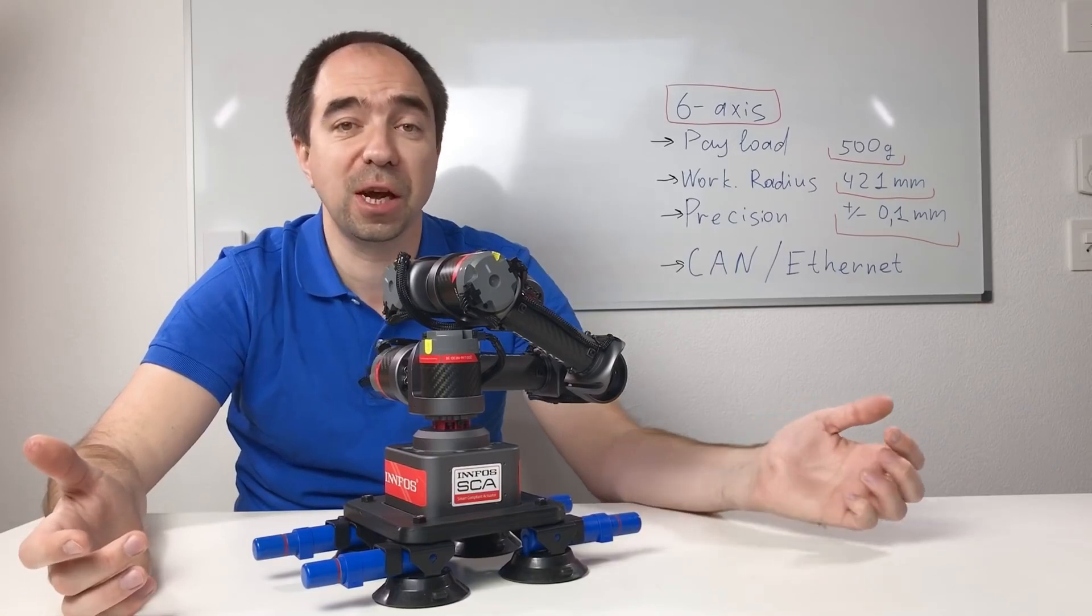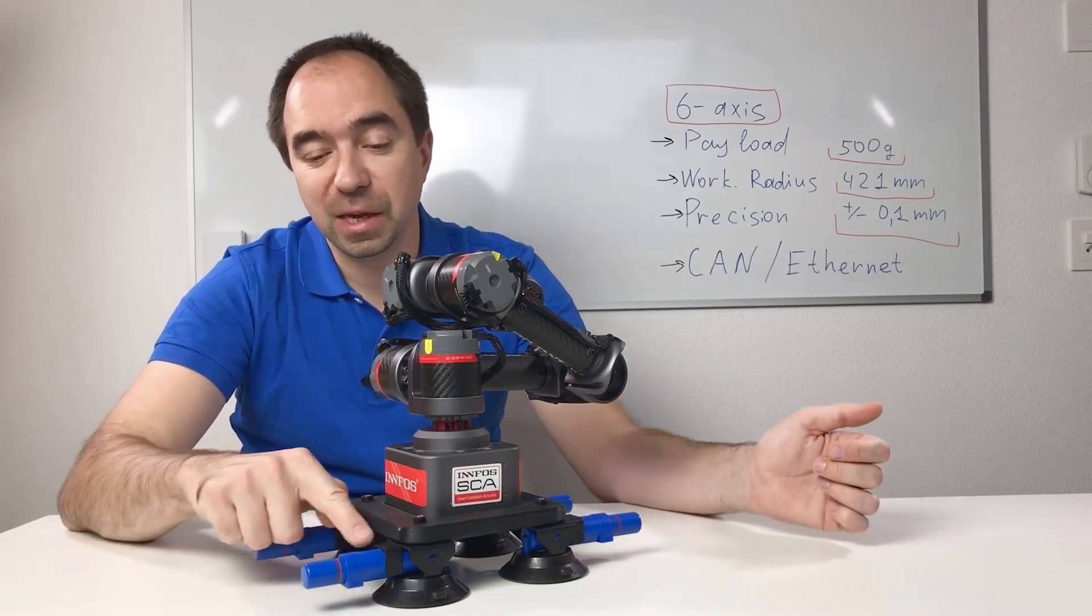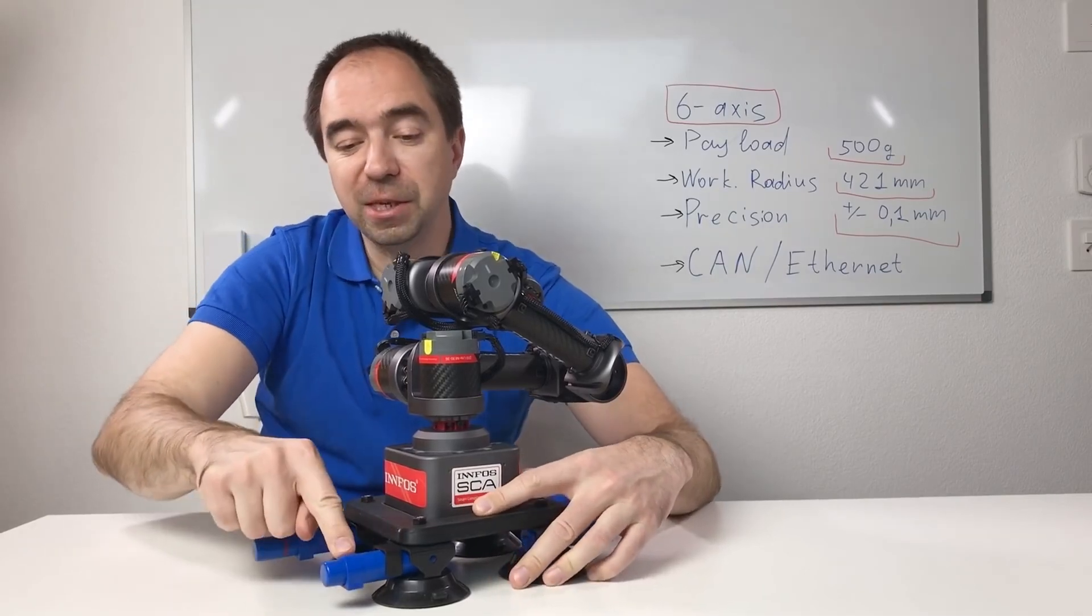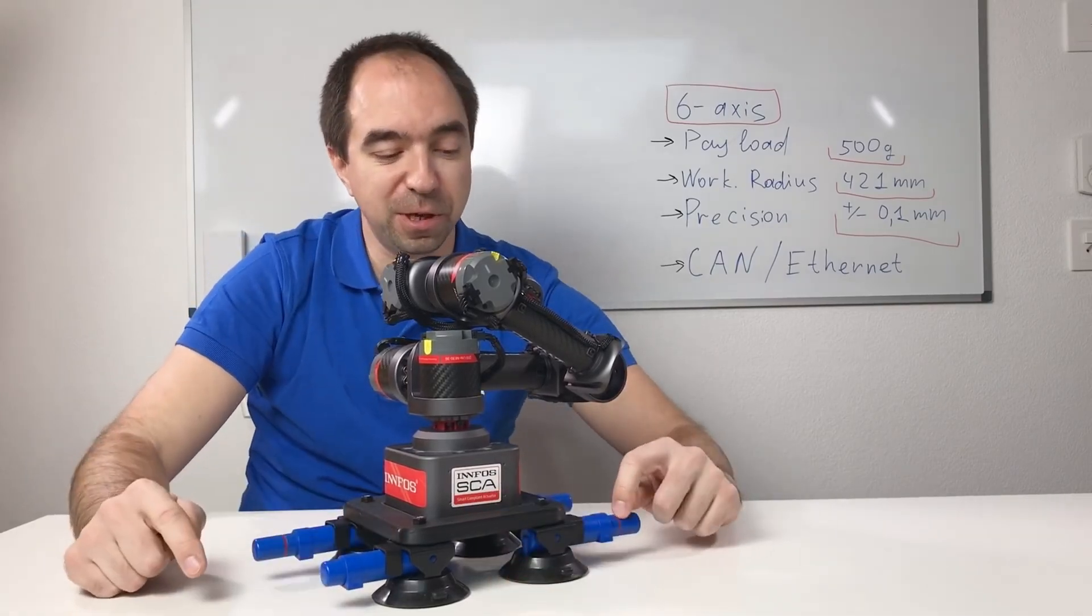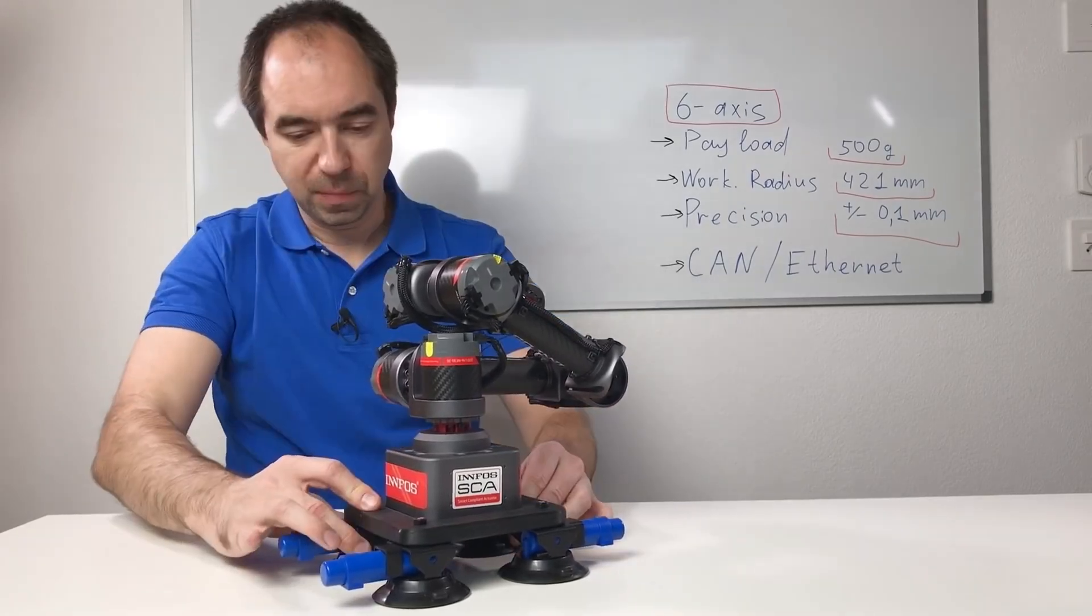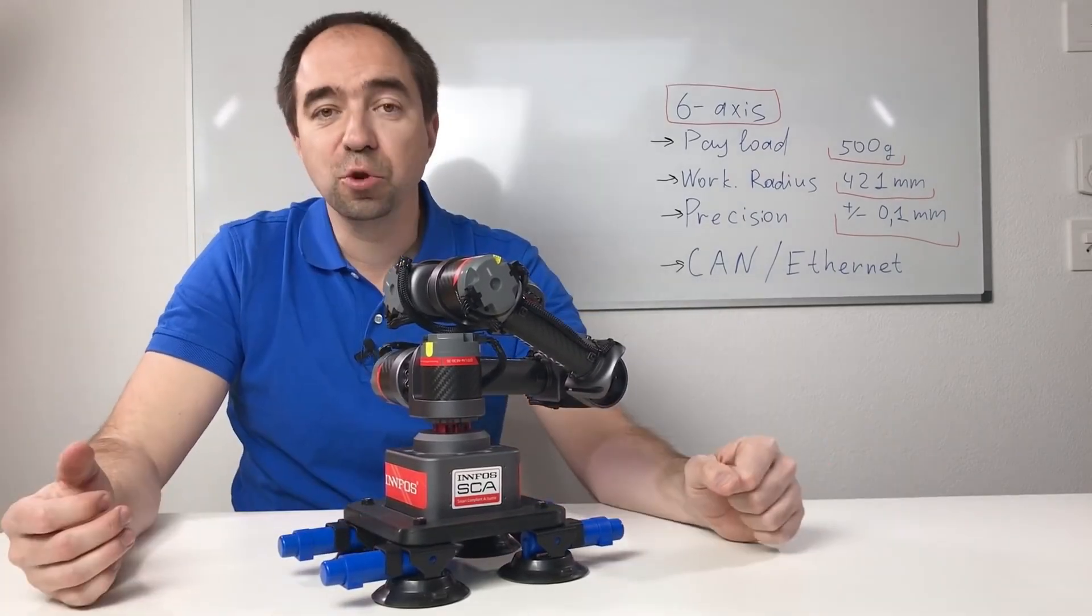To use the suction cups it's super easy. There is a pump inside and you just pump the air. And basically you need to pump the air till this red line disappears. And like this it's fixed. Super easy, super nice and super practical solution.